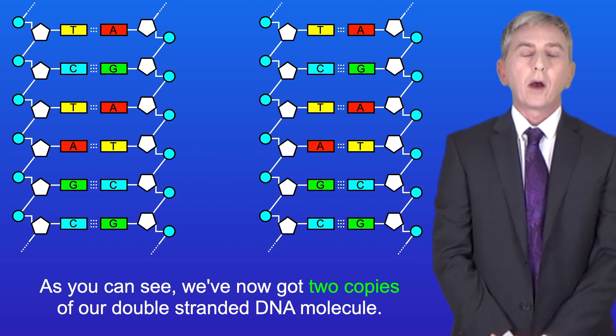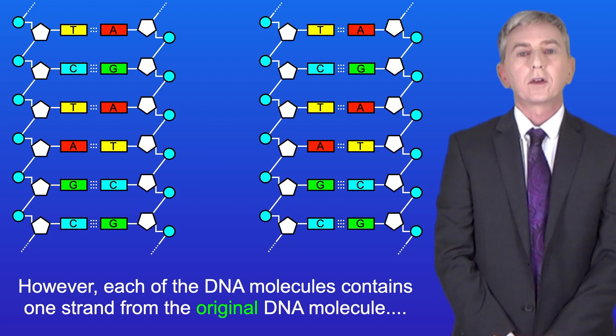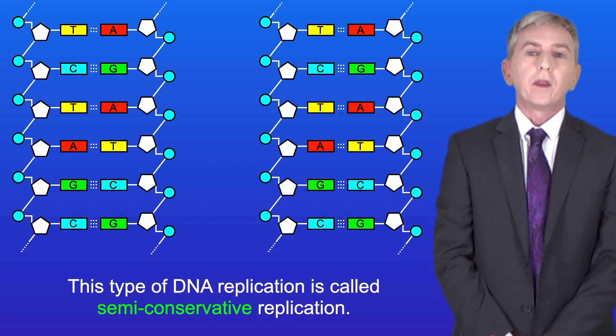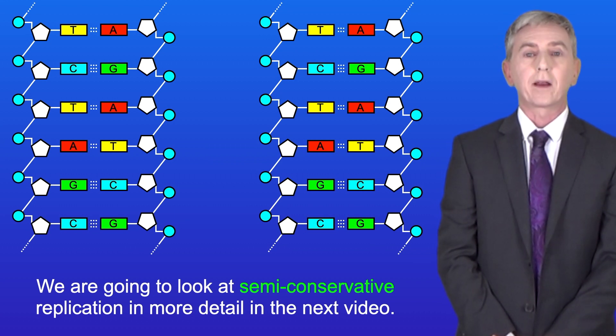As you can see we've now got two copies of our double-stranded DNA molecule. However each of the DNA molecules contains one strand from the original DNA molecule and one strand which is brand new. This type of DNA replication is called semi-conservative replication and we're going to look at semi-conservative replication in more detail in the next video.